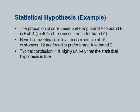For example, a marketing analyst has made a claim that the proportion of consumers preferring brand A to brand B is 0.4 — that is, 40 percent of consumers prefer brand A. This is the hypothesis. One interpretation is that if you draw a random consumer, that person is likely to prefer brand A to brand B with probability 0.4. Or if you pick a large number of people, about 40 percent will say they prefer brand A.